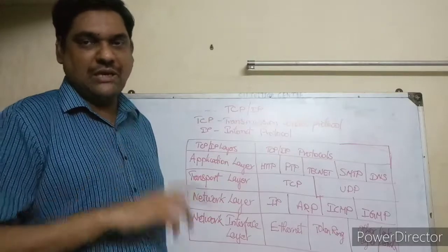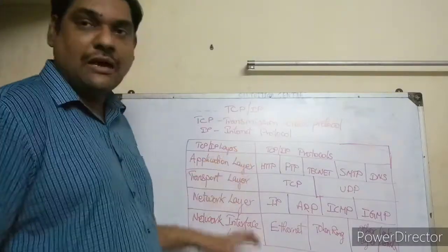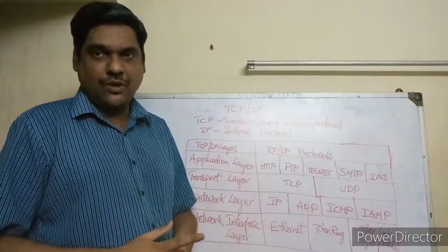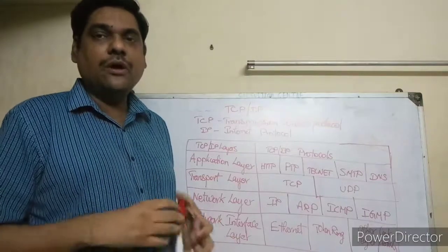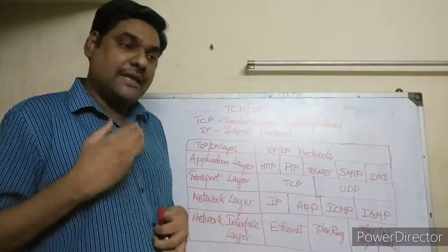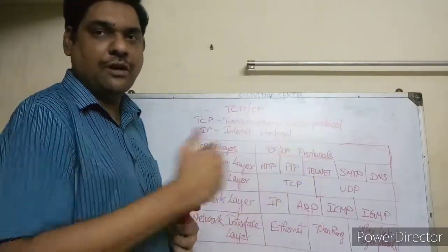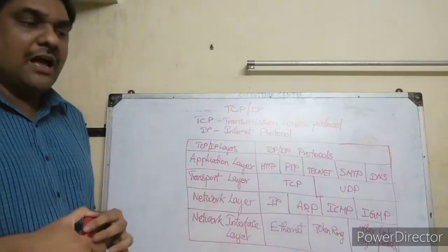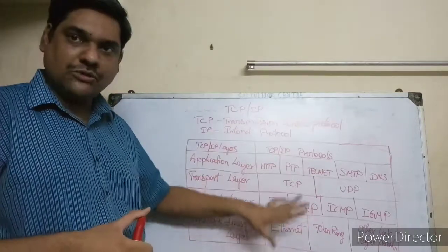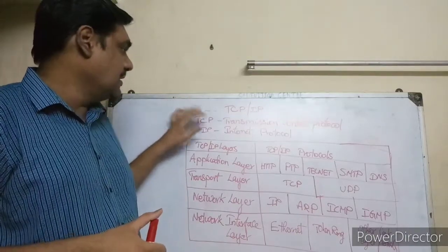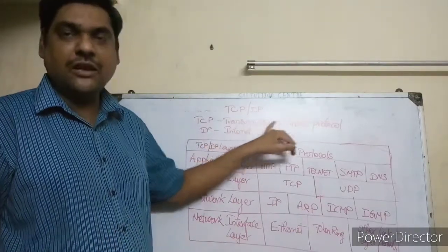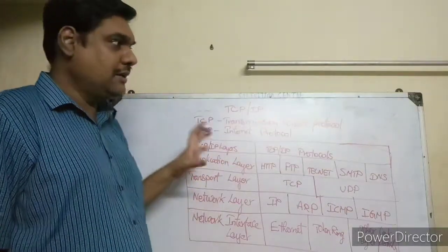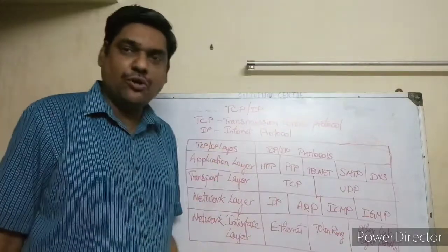TCP/IP is a set of protocols. There are many protocols through which data is transferred from one computer to another. The two main protocols are TCP — Transmission Control Protocol — and IP — Internet Protocol. These are the two main protocols used on the internet.